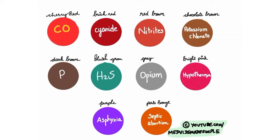Post-mortem staining can be various colors depending on the cause of death. Carbon monoxide poisoning produces cherry red staining; cyanide poisoning gives brick red; nitrites poisoning gives reddish brown; potassium chloride poisoning gives chocolate brown; phosphate poisoning gives dark brown; hydrogen sulfide poisoning gives bluish gray. In hypothermia it is bright pink; in asphyxia it is purple; and in septic abortion it is pale bronze.